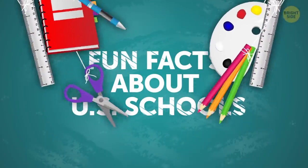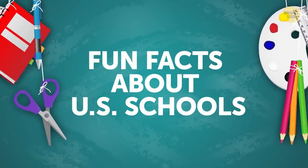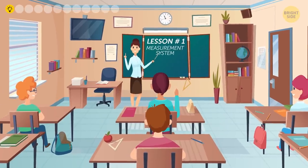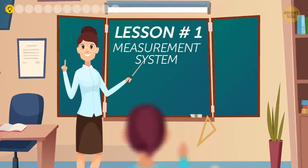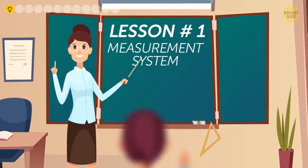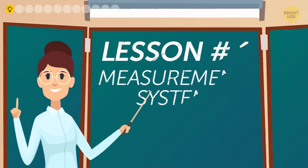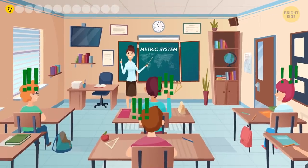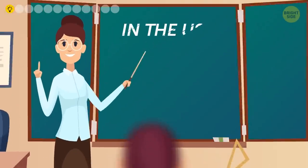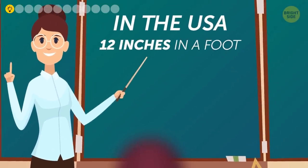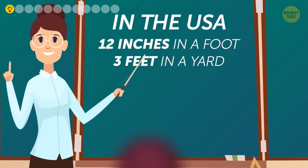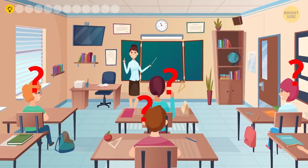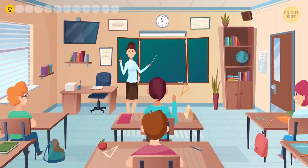How about some other fun facts about US schools? Number one: our measurement system. Yes, it has to be addressed. The standard measurement system is still taught in schools, while the rest of the world uses the metric system, which many believe is much easier to understand. In the USA, it is taught that there are 12 inches in a foot, 3 feet in a yard, etc. Maybe the US will catch up with the rest of the world one day, or vice versa.